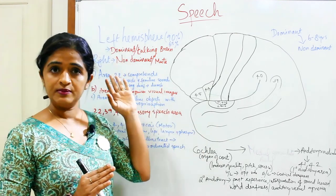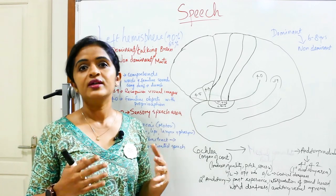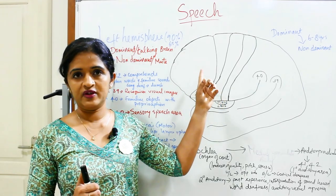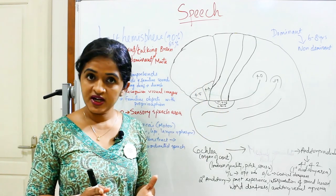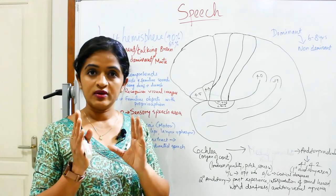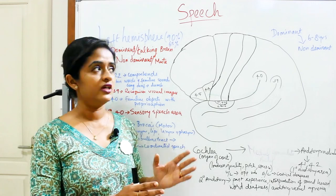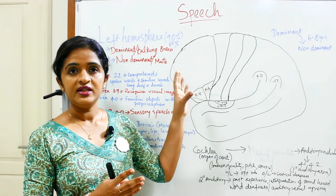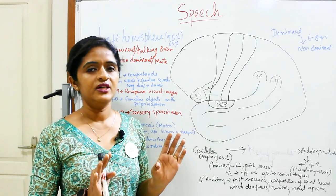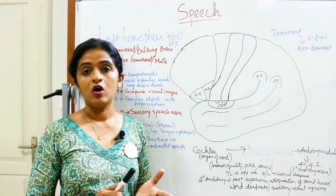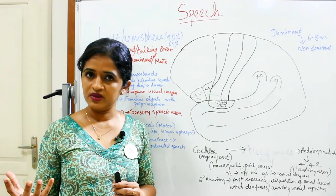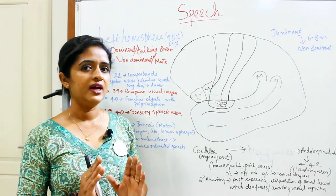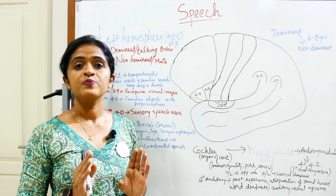If you are a right-handed person, there is a chance of having speech centers on the left dominant hemisphere up to 90 to 95 percent. If you are a left-handed person, there is still a chance of having speech centers on the left dominant hemisphere up to 65 to 70 percent. Hence the left cerebral hemisphere is known as the dominant brain or talking brain, while the right hemisphere is known as the non-dominant brain or the mute brain.